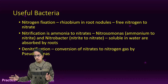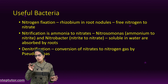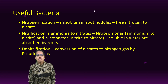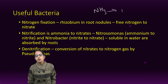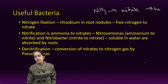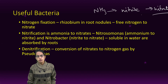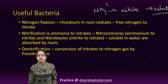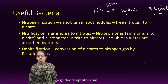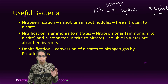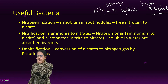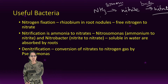This does not take place all at once. Ammonia gets converted into nitrite first, and then nitrite gets converted into nitrate. Two different bacteria are involved: from ammonia to nitrite, it is Nitrosomonas; and from nitrite to nitrate, it is Nitrobacter.